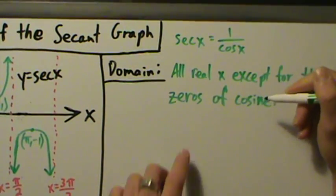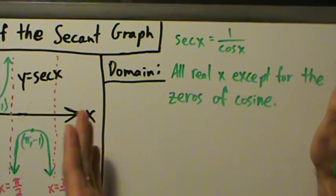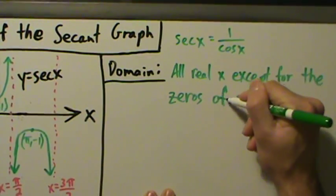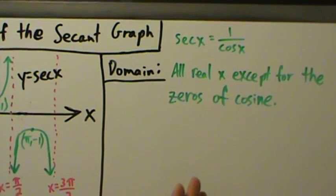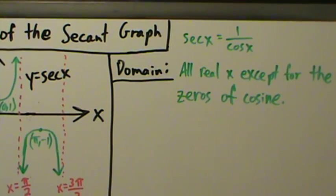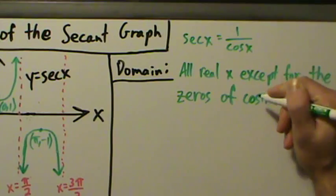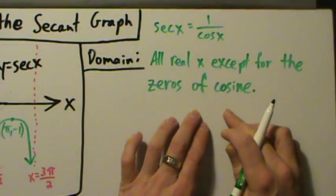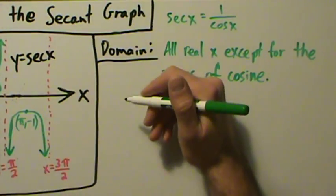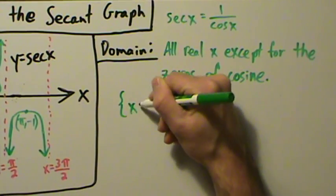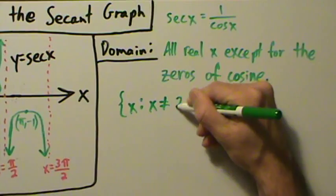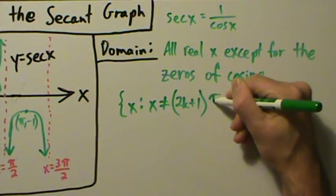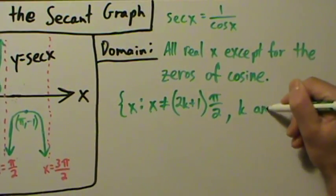A zero of a function is a value of x that makes the function equal to zero. So a zero of cosine would be pi over 2, because cosine of pi over 2 is zero. Or 3pi over 2, because cosine of 3pi over 2 is zero. Negative pi over 2 and negative 3pi over 2 are two more zeros of cosine. In set builder notation, the domain is: x such that x does not equal (2k+1)·π/2, where k is any integer.